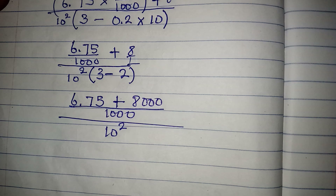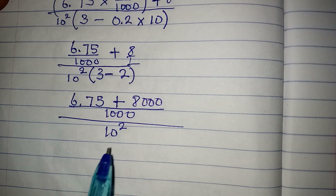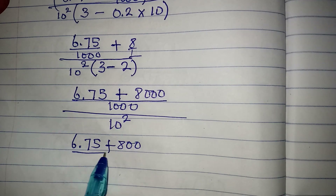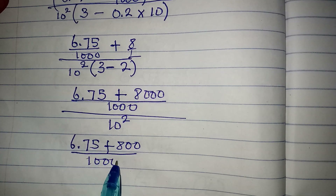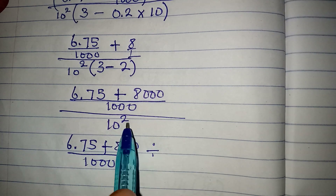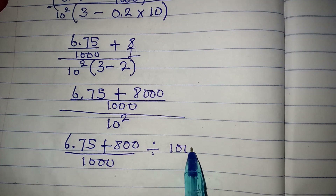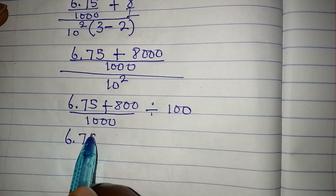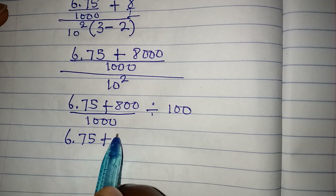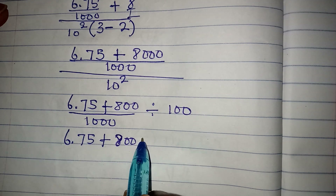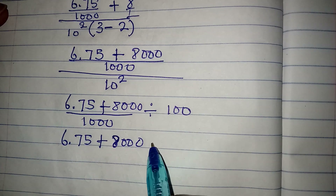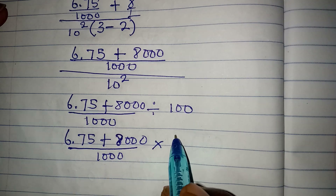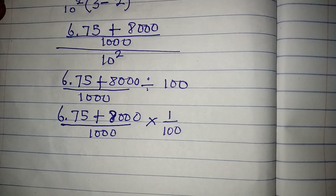Continuing, we have 6.75 plus 8000 divided by 1000, then divided by 10 to the power of 2 which gives us 100. Remember we are not to use a calculator. So we have 8000 plus 6.75 over 1000, multiplied by 1 over 100.